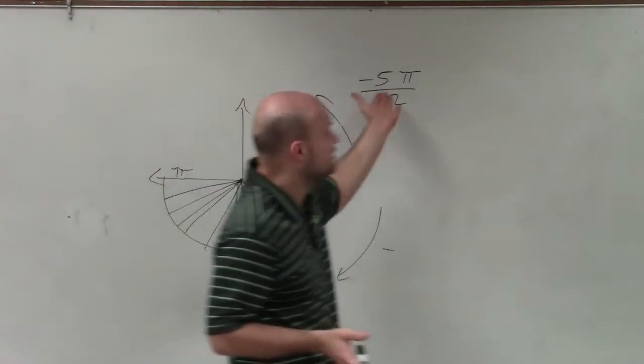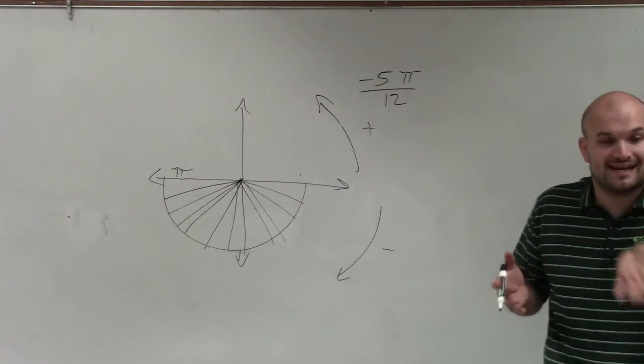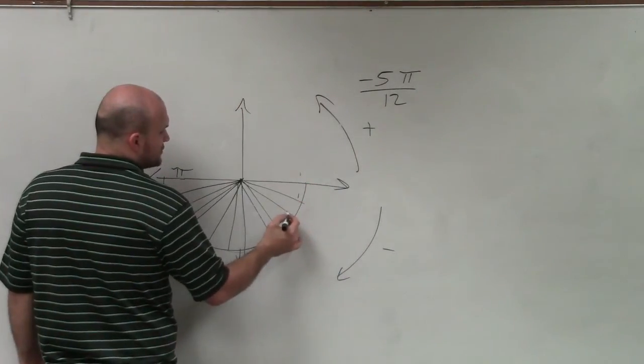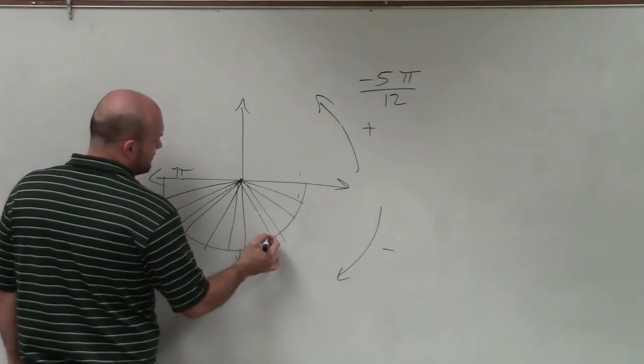And we're only going to be taking an angle, rotating it to 5 of those 12 parts. So I'll go negative 1 pi over 12, 2 pi over 12, 3 pi over 12, 4 pi over 12, 5 pi over 12.